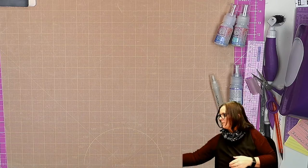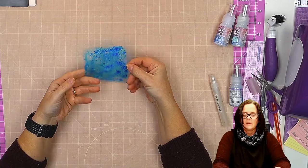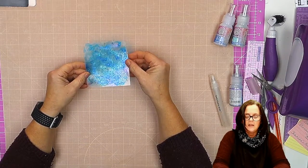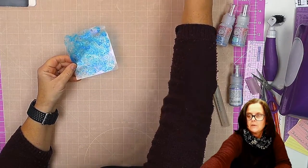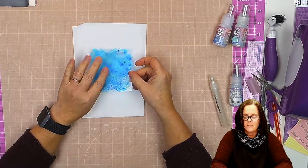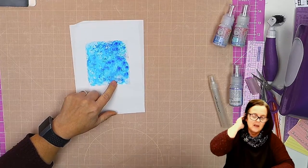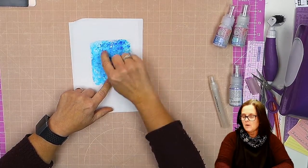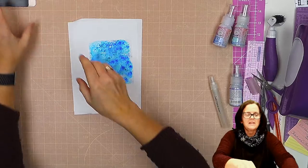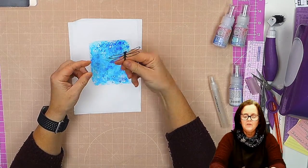So I'm going to put that to one side, and I have a piece here that I have already done. So you can see, this is the side where I applied it, and this is the other side.